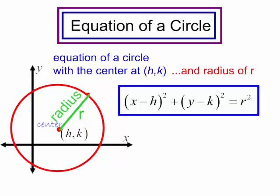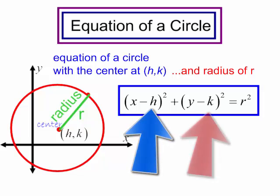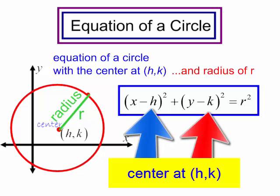In this video, we are going to talk about the equation of a circle: x minus h, in parentheses, squared, plus y minus k, in parentheses, squared, is equal to r squared. This is the equation of a circle with the center at (h, k) and a radius of r.